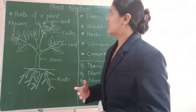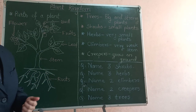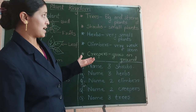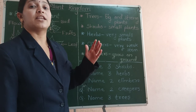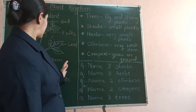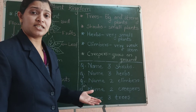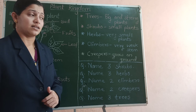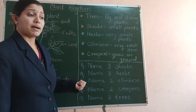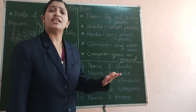Now we will study the types of plants or trees. Some trees are very very tall like the coconut tree. Some trees are huge with thick stems, like the banyan tree. Also we have many other trees like mango tree, jackfruit tree, guava tree and neem tree.